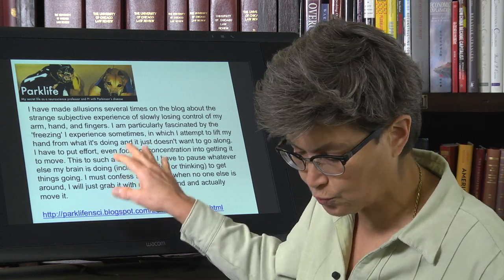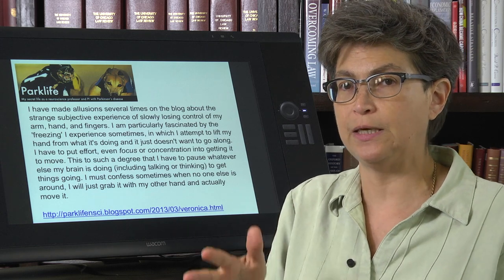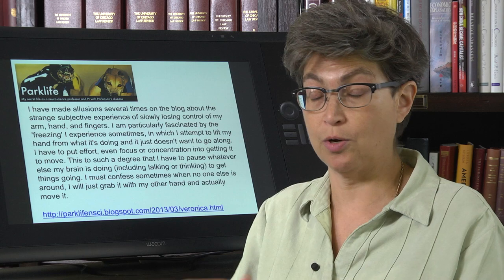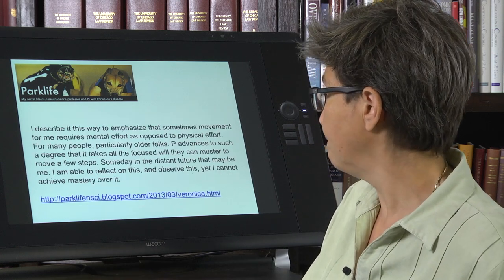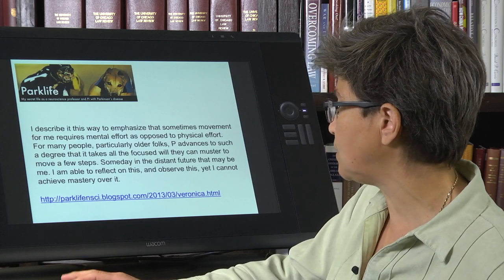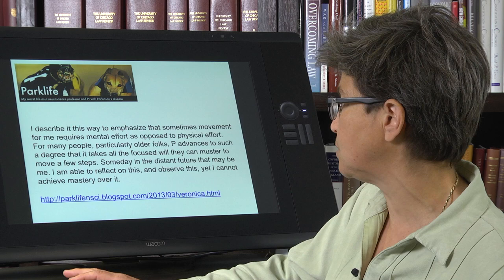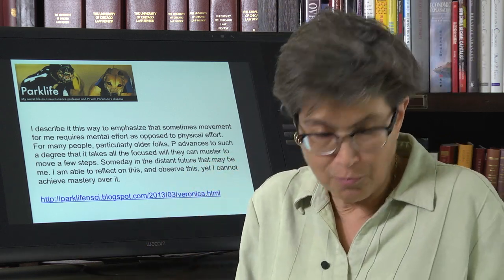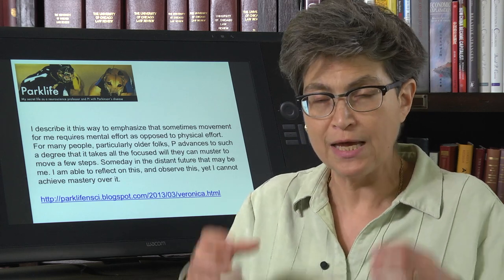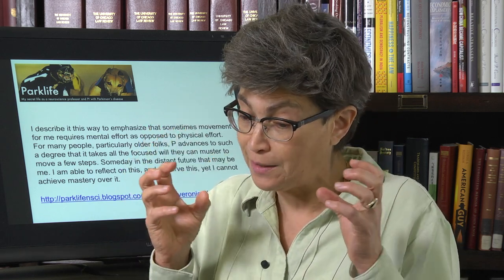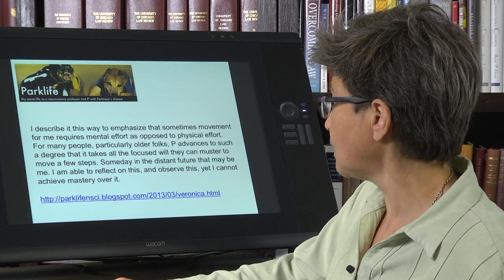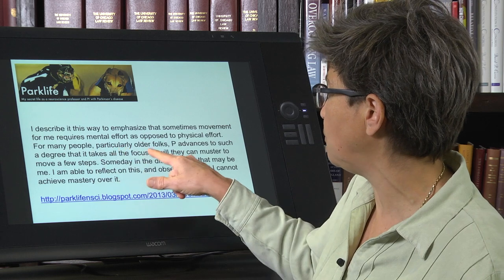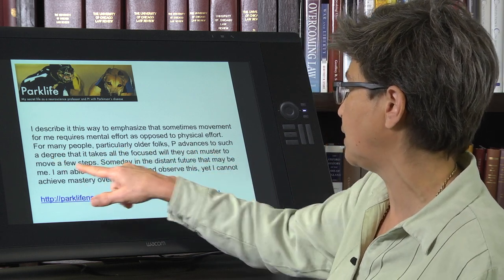This also illustrates that Parkinson's will typically start on one side, or primarily on one side — this individual appears more affected on one side than the other. The blog continues: 'I describe it this way to emphasize that movement for me requires mental effort as opposed to physical effort. This is not a problem with motor neurons, neuromuscular junction, or muscles. This is a problem with getting there, with engaging them from your cerebrum — allowing your cerebrum to connect to the motor pathways.' For many people, Parkinson's advances to such a degree that it takes all the focused will they can muster to move a few steps.